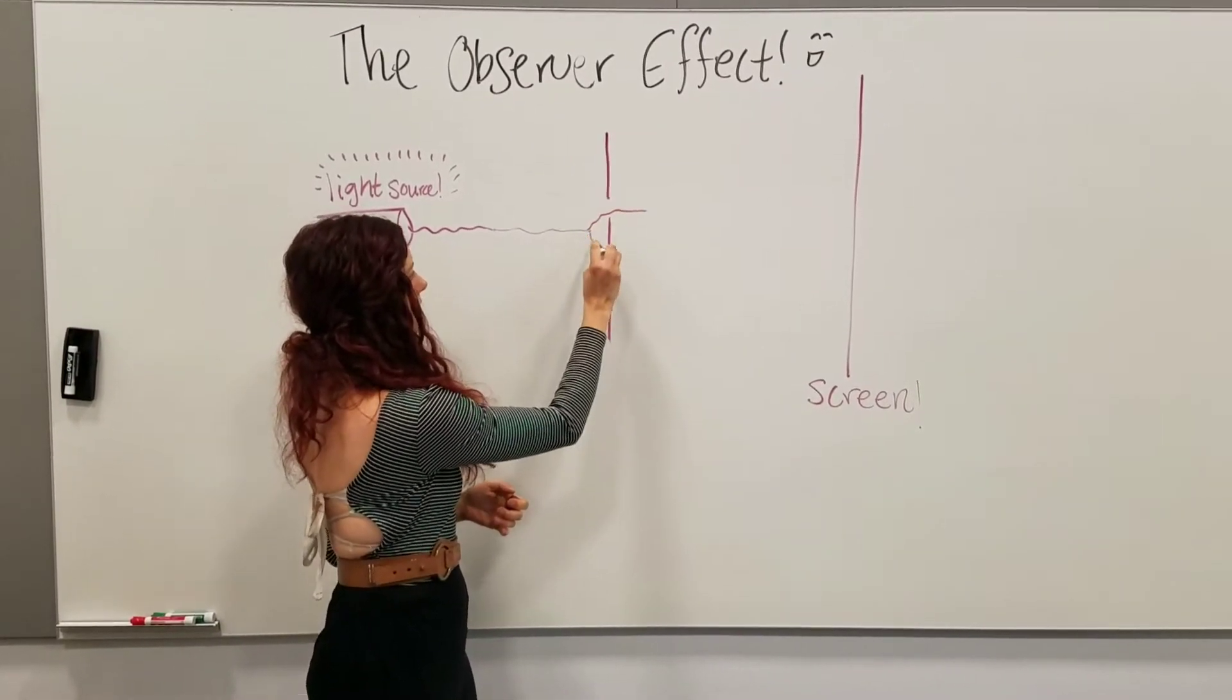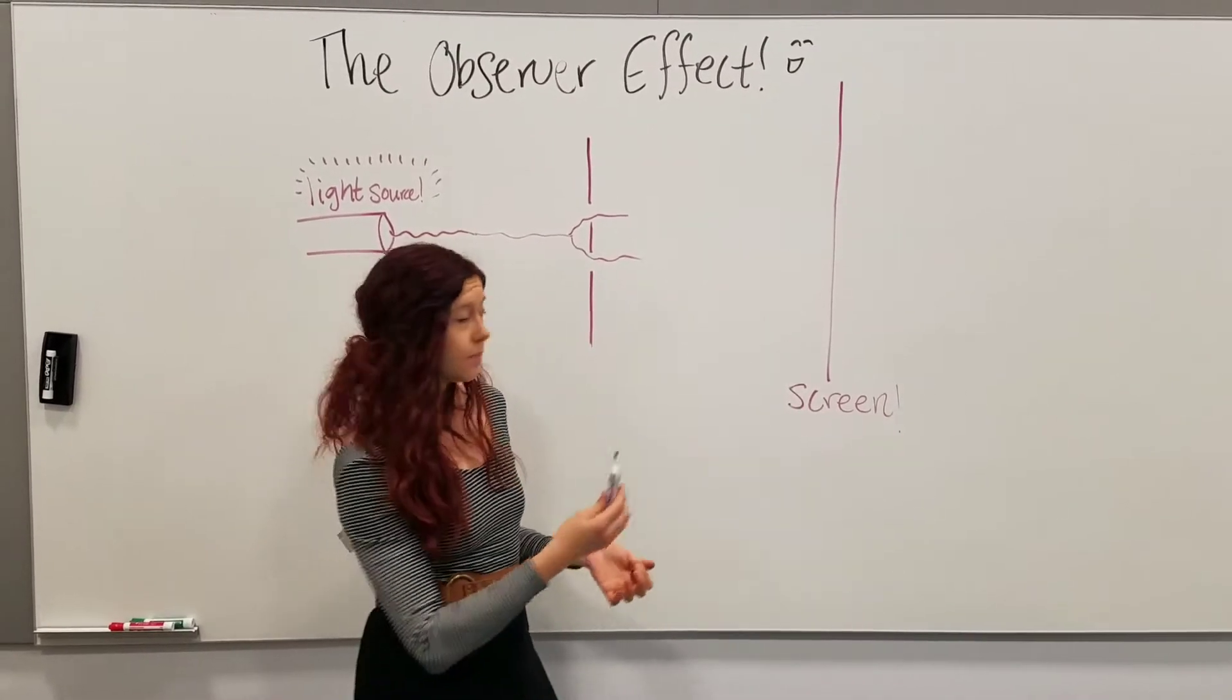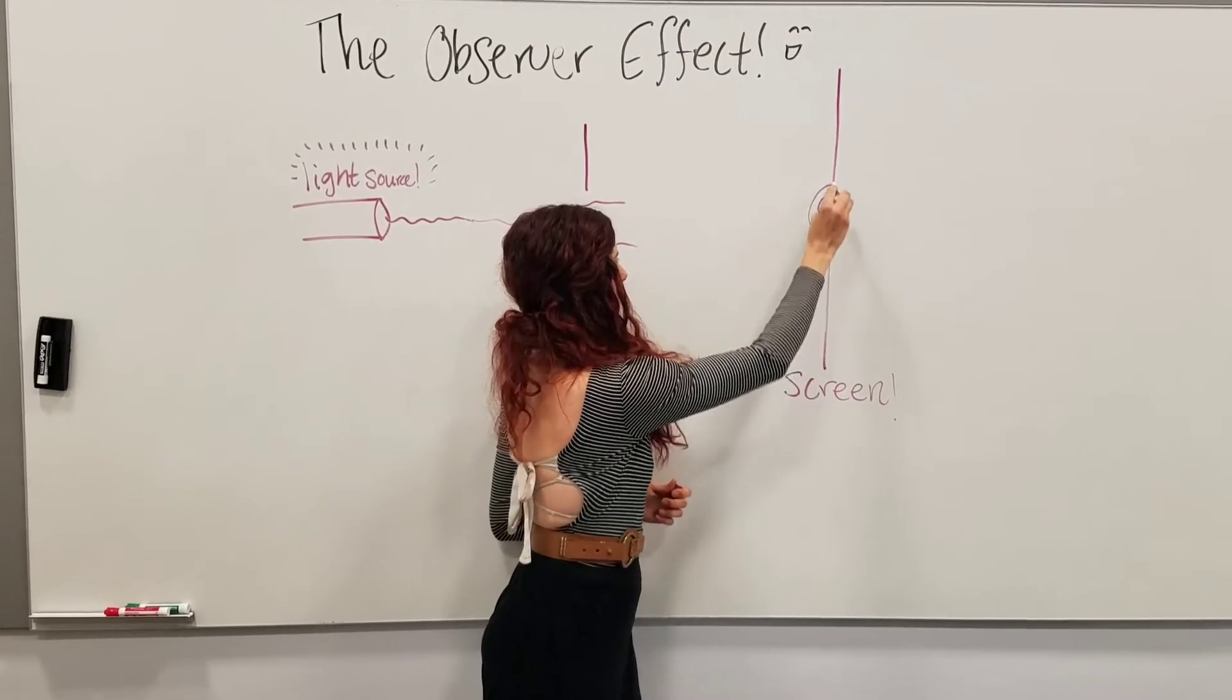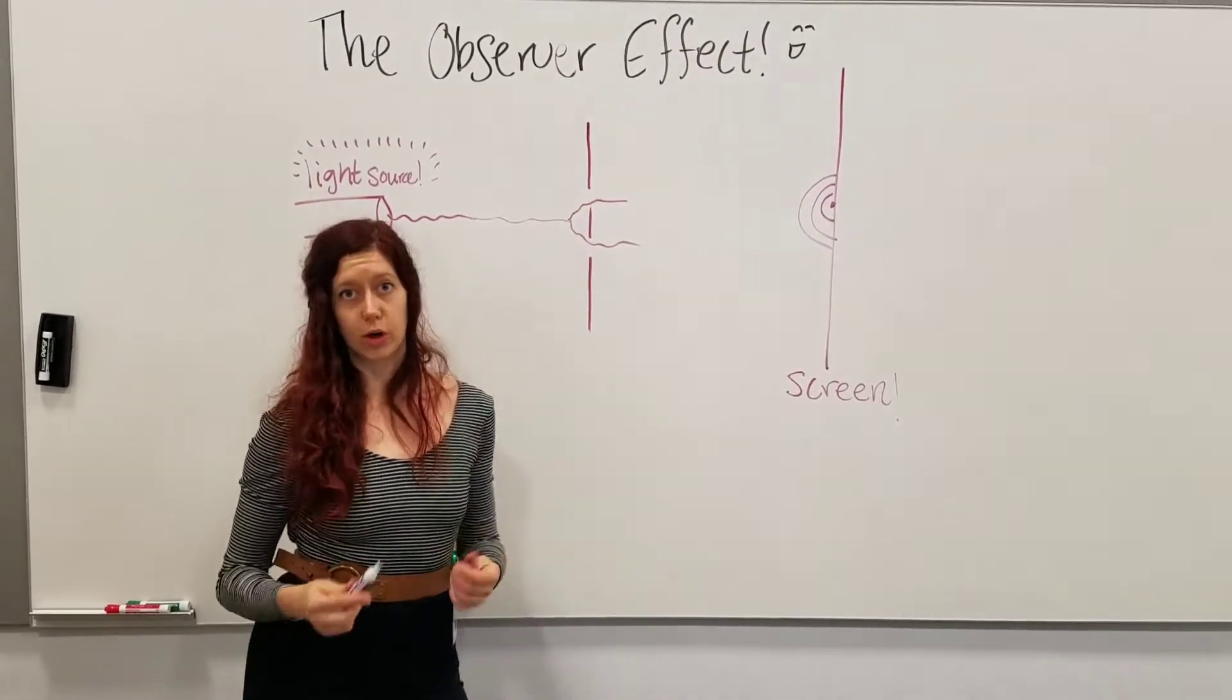And so half of the light goes through here, half of the light goes through here. And then ultimately it hits the screen where you get bands of dark and bright spots. So I'm going to draw it like a rainbow to kind of indicate those bands of dark and light.